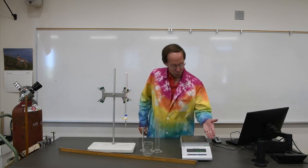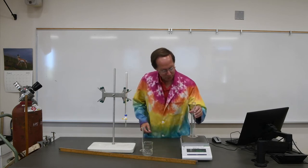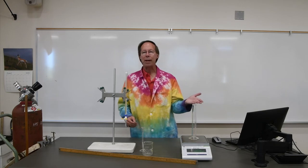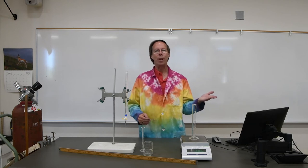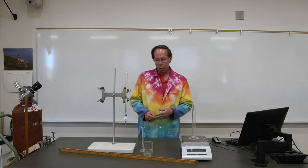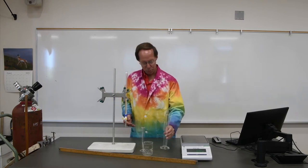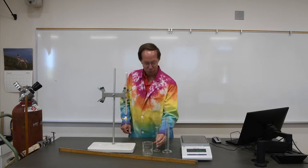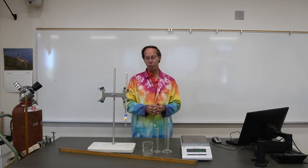If we want to measure masses, we will use something like this electronic balance. We can set an object on that balance, and it will very quickly tell us the mass of that item. In this particular case, it's 130.08 grams. We have many different devices we can measure volumes in. One of them is this 100 milliliter graduated cylinder and its smaller cousin, the 10 milliliter graduated cylinder.